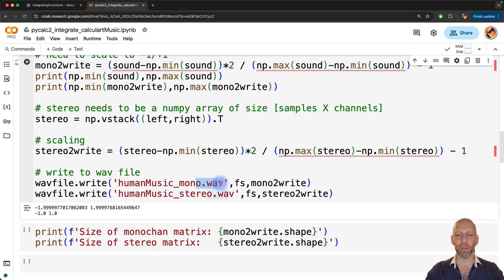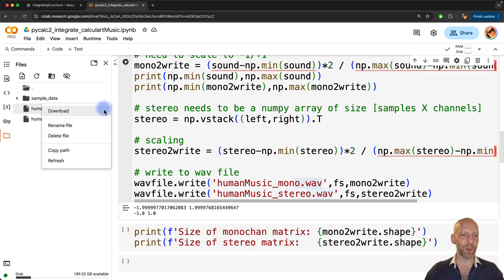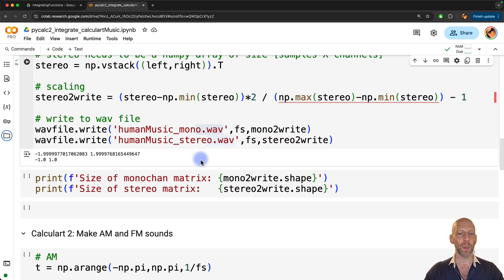Now, what happens to this wave file? Where does it go? If you are working on a local installation of Python, this will just appear in whatever folder you're working in. But here on Google Colab, this file is still stored in the cloud. So we can go over to this menu option on the left. We see for folder. And here we have these two wave files that I just created here. So you can click on the three dots menu and download. And then this will download to your downloads folder or wherever it goes.